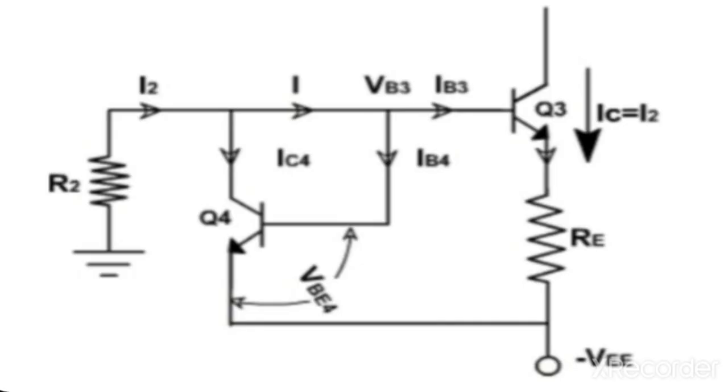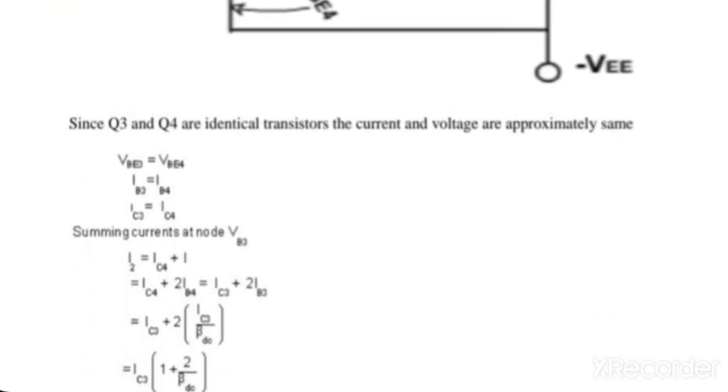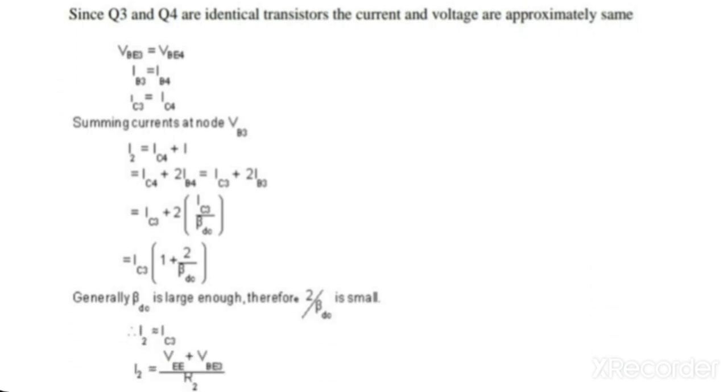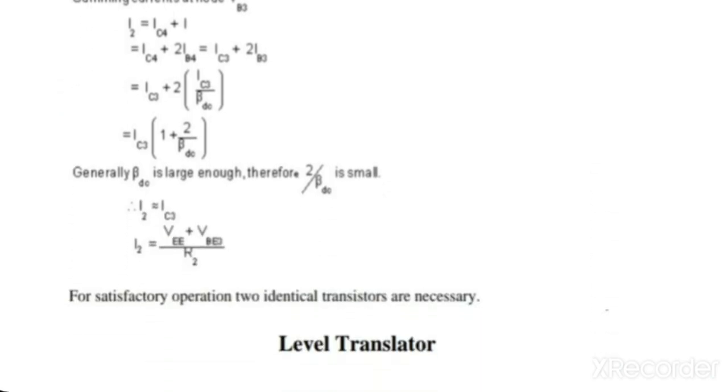Therefore current I2 is equal to IC4 plus 2IB4. We can write equations for these currents: I2 is equal to IC4 plus i, where i is equal to 2IB4, so I2 is equal to IC4 plus 2IB4. IB4 is equal to IB3 and IC4 is equal to IC3.